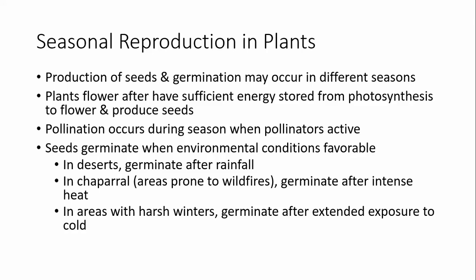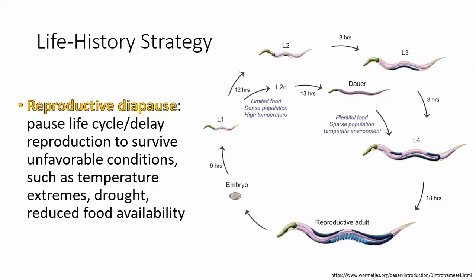In chaparral ecosystems prone to wildfires, some plants have adapted so their seeds only germinate after exposure to intense heat, smoke, or other wildfire conditions. In areas with harsh winters, plants may need extended cold exposure to germinate. For example, tulip bulbs need to be exposed to cold before they bloom — if kept in a temperature-regulated house and never chilled, they may never bloom.